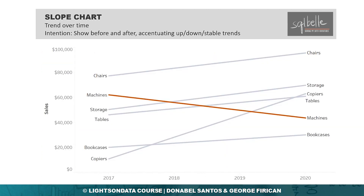If the goal is to show a before-and-after view, we can use what we call a slope chart. The slope chart retains only two points in time — typically the first point and the last point in a time series graph. The slope chart helps accentuate a general trend: did something increase since we started, did something decrease, or did it remain unchanged?